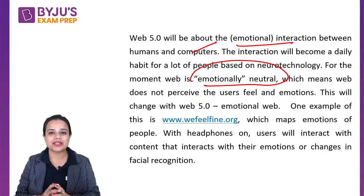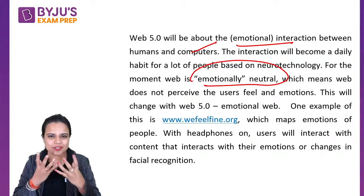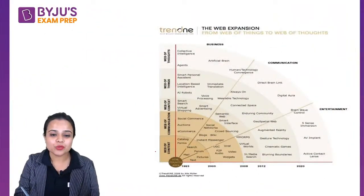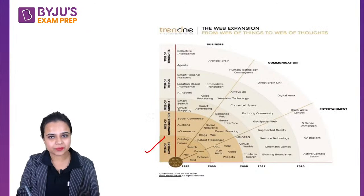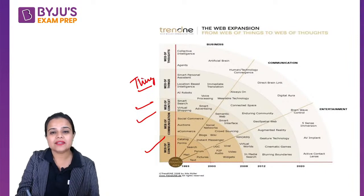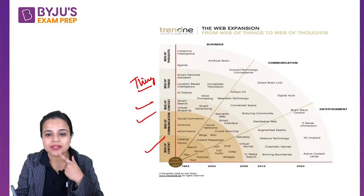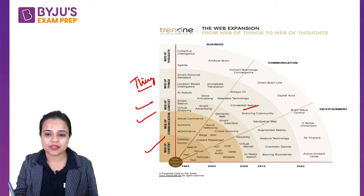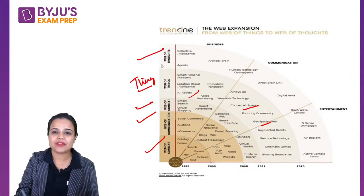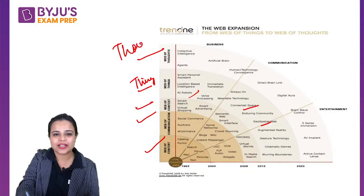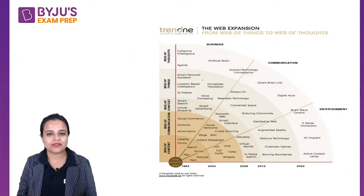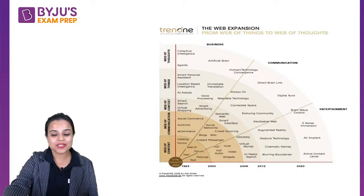In Web 5.0, emotions of people will be linked to the emotions of computers — facial recognition, change of expression, everything will be detected. We have moved from the web of content to the web of communication, then to context, then to the web of things where internet became more profound — using space, community, geospatial tagging, robotics. Finally it's the web of thoughts, emotions — and Web 5.0 moves even further ahead.